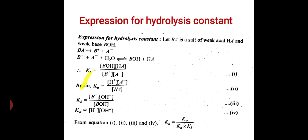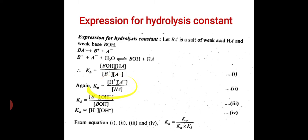Ka, the ionization constant for the weak acid, is equal to the molar concentration of H+ times the molar concentration of A−, divided by the molar concentration of HA. This is written from weak acid HA, which forms H+ and A−, with ionization constant Ka. This is equation 2.